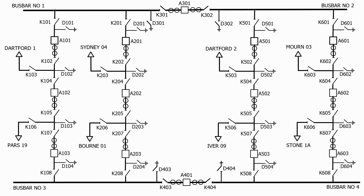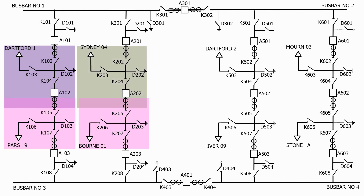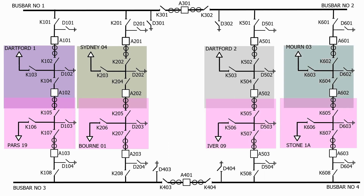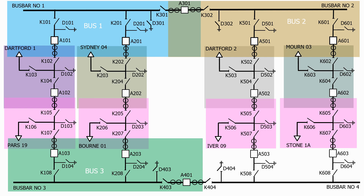Let's now see how we apply these zones to a full substation. Here we have a diameter substation with 4 diameter bays and 2 bus sections. Let's firstly show all of the feeder protection zones, then the protection zones for bus 1, bus 2, bus 3, and bus 4.